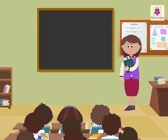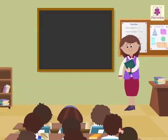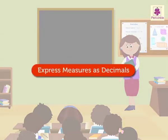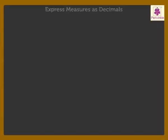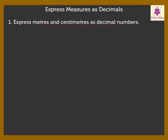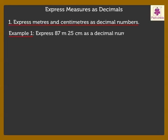Hello kids. Today, let us learn how to express measures as decimals. We will begin with expressing meters and centimeters as decimal numbers. To understand this, let us solve an example. Express 87 meters 25 centimeters as a decimal number.